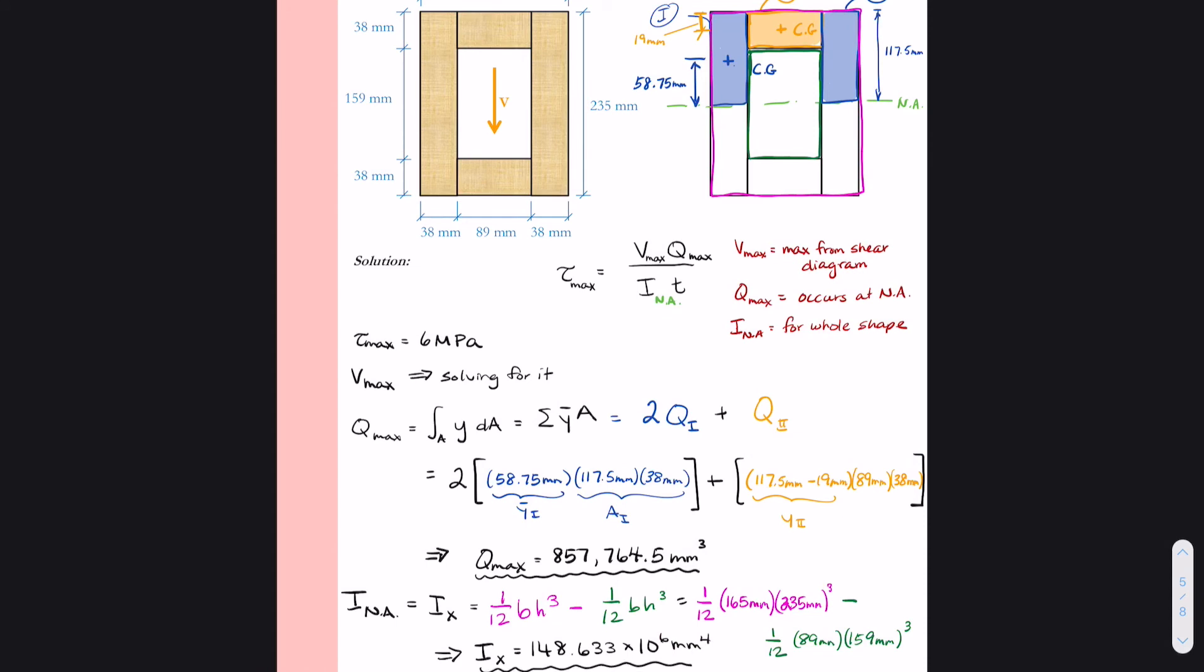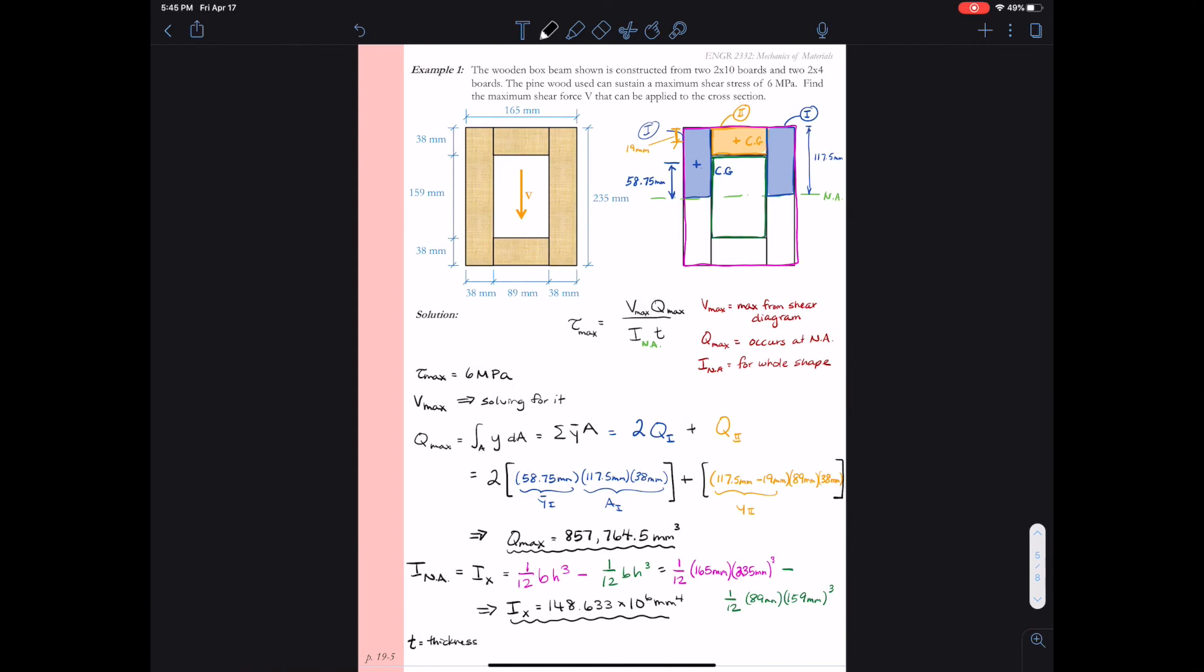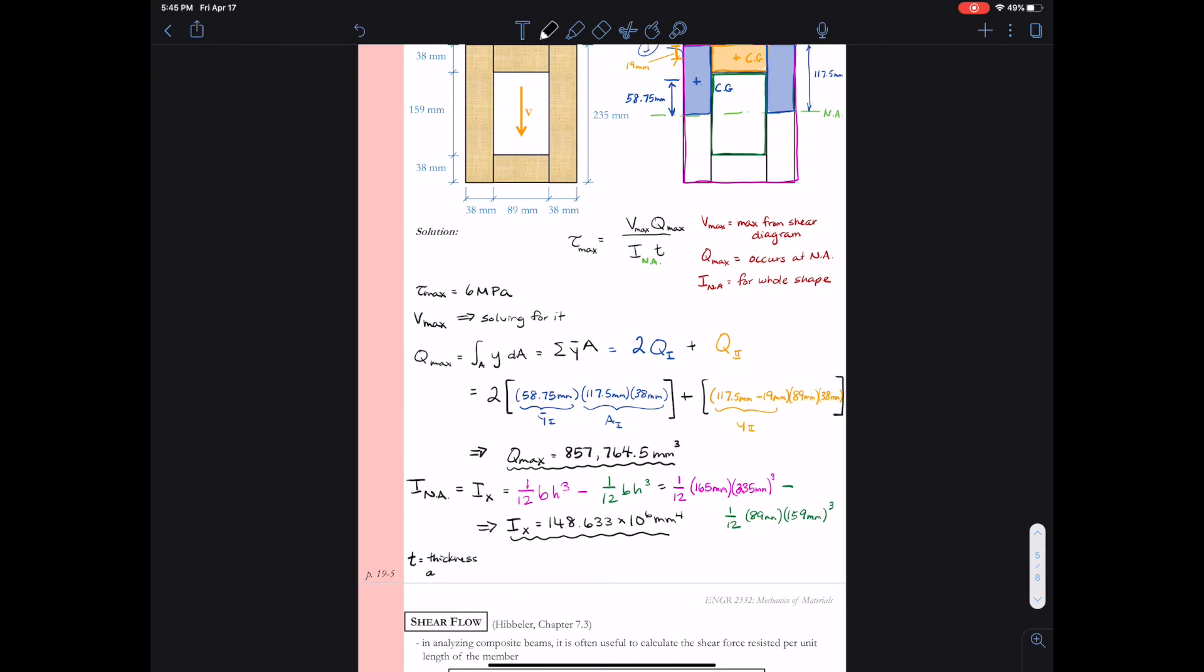Now I often get the question, why do we use the entire shape for moment of inertia but not for Q? Well, we want the max value for Q. Because moment of inertia is the second moment of the area, there's a y squared A term in there. So when we go below the neutral axis, y squared remains positive.